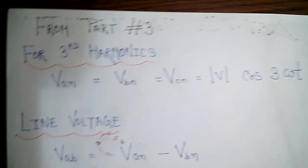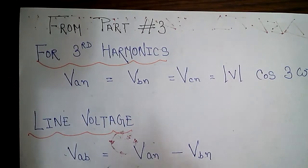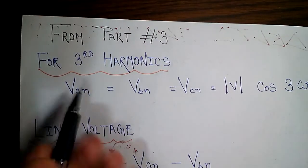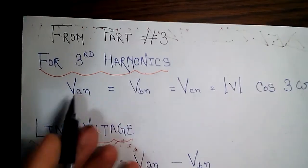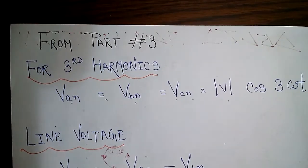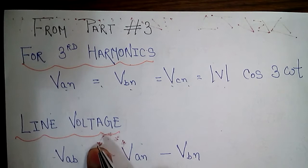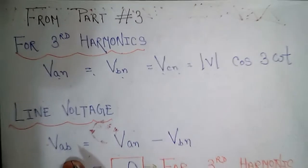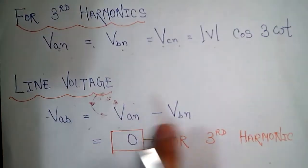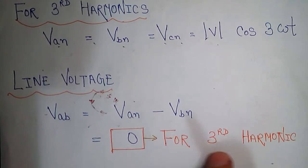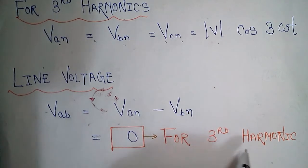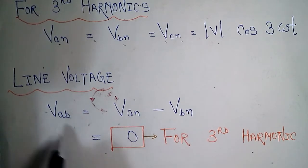Now we'll see the mathematics. If you have seen part three of the harmonics video — if not, please do. We showed that for third harmonics, V_an equals V_bn equals V_cn, that is V·cos(3ωt). So what will be the value of my line voltage? V_ab, my line voltage, will be V_an minus V_bn. Since V_an equals V_bn, V_an minus V_bn equals zero. This is only for third harmonics — keep that in mind. So for third harmonics there will be no line voltage.